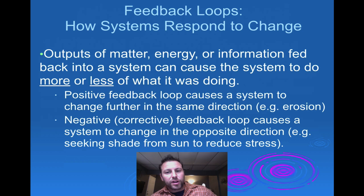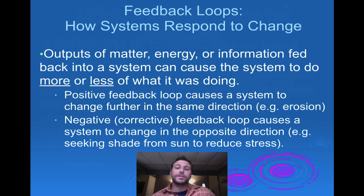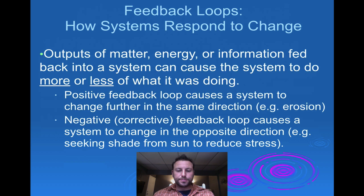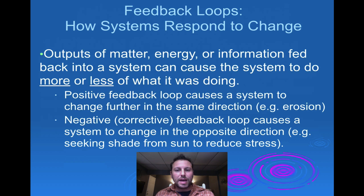Feedback loops are really important in environmental science. We have positive and negative feedback loops, and we experience these every single day. Positive feedback loops cause a system to change further in the same direction. The example we can give is erosion, such as beach erosion — a small amount of sediment moves, and then over time more and more sediment moves. This furthering effect can also work in reverse, where a change becomes smaller and smaller. Whether something becomes more exasperated or less and less, that's a positive feedback loop.